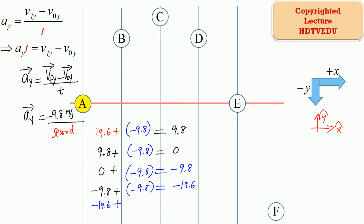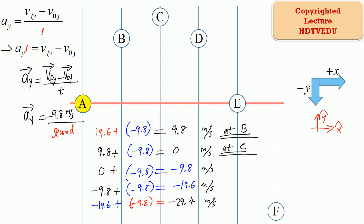And then we add negative 9.8 again and we get negative 29.4 meters per second. So at point A it was 19.6; going from A to B is one second — at B the vertical velocity is 9.8. At C the vertical velocity is 0. Then at D it is negative 9.8, at E it is negative 19.6, and at F it is negative 29.4.